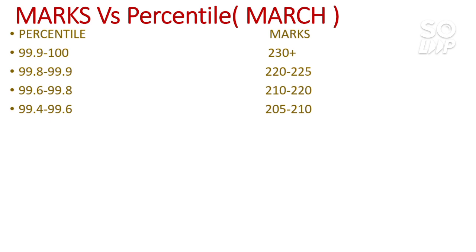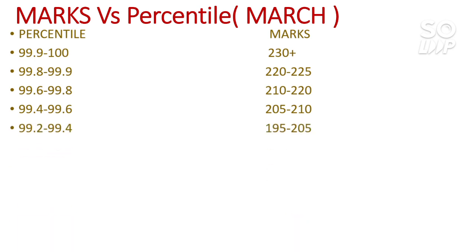For 99.4 to 99.6 percentile, you need around 205 to 210 marks. For getting into the top 5 NITs for CS, you need around 99.3 to 99.4 percentile, making 200 plus marks the safer score if you are targeting CS in the top 5 NITs of India. I've already made videos for each category explaining the safer scores.